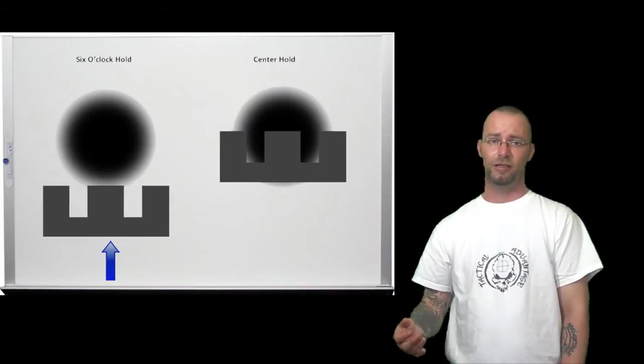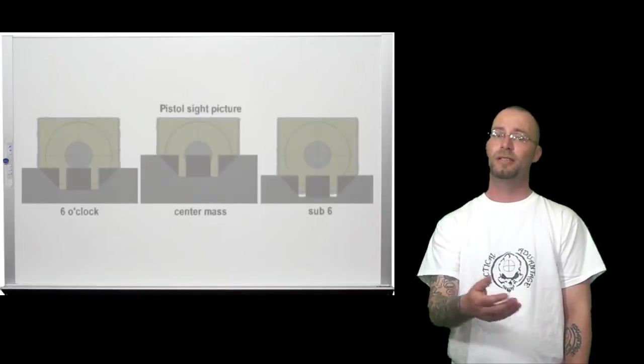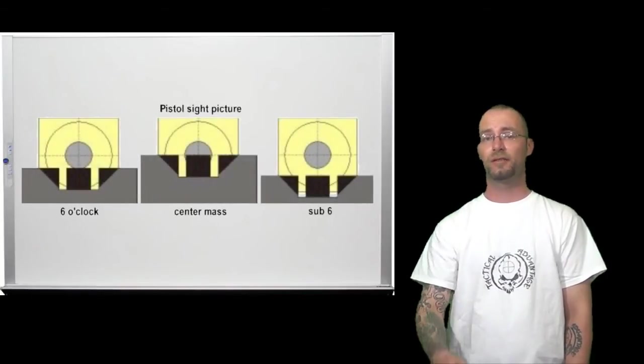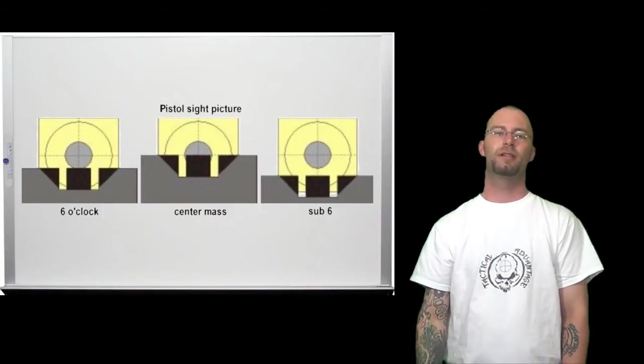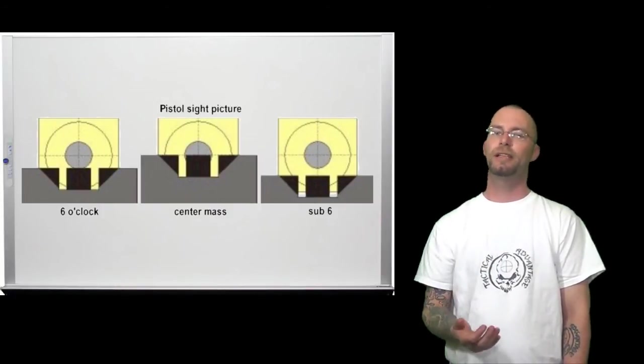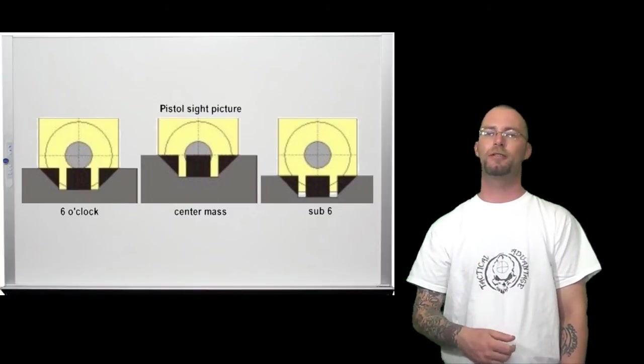Next we will look at a final illustration of holds which shows the center mass or center hold again, the 6 o'clock hold and the sub 6. All of these are really shooter preference. It needs to be investigated by a shooter to find out what works for them for their particular application of shooting.